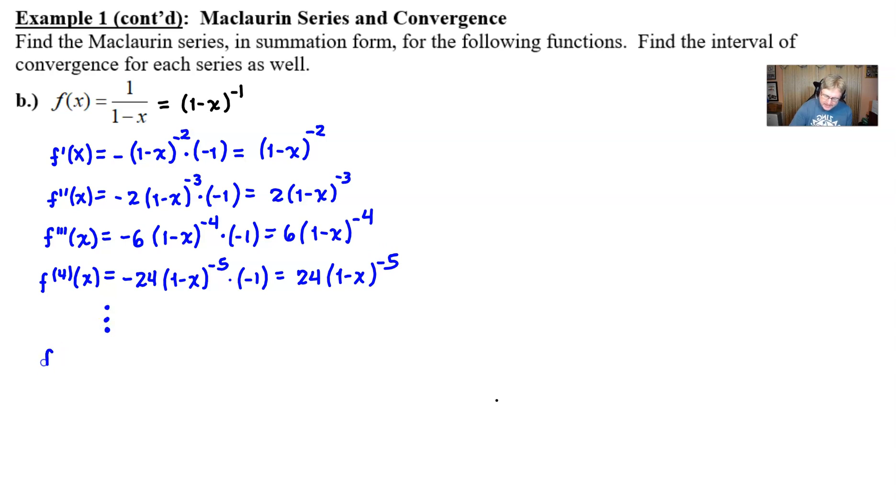Now, we would like to come up with an nth derivative. The reason why we need an nth derivative is because we're asked to write this Maclaurin series in summation form. If we were only writing, say, the first three or four non-zero terms, we wouldn't have to go to the nth derivative. But the nth derivative is going to set the stage to find the nth term, and it's the nth term that you throw in with the summation.